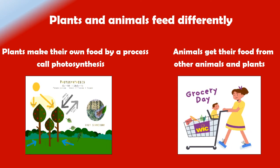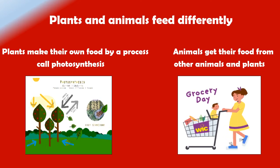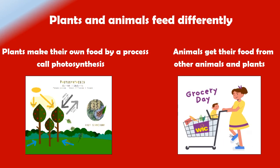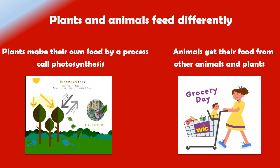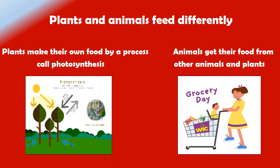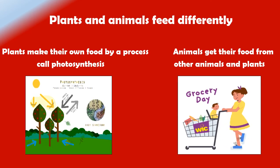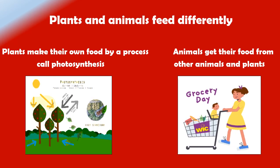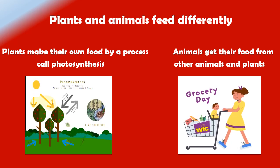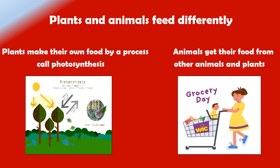Plants are known to be autotrophic living things because they are able to make their own food. Animals, on the other hand, get their food from other animals and plants. As we know, plants are the producers and animals are the consumers. Animals are known to be heterotrophs because they are not able to make their own food. Therefore, they have to look to other plants and animals in order to get food for survival.